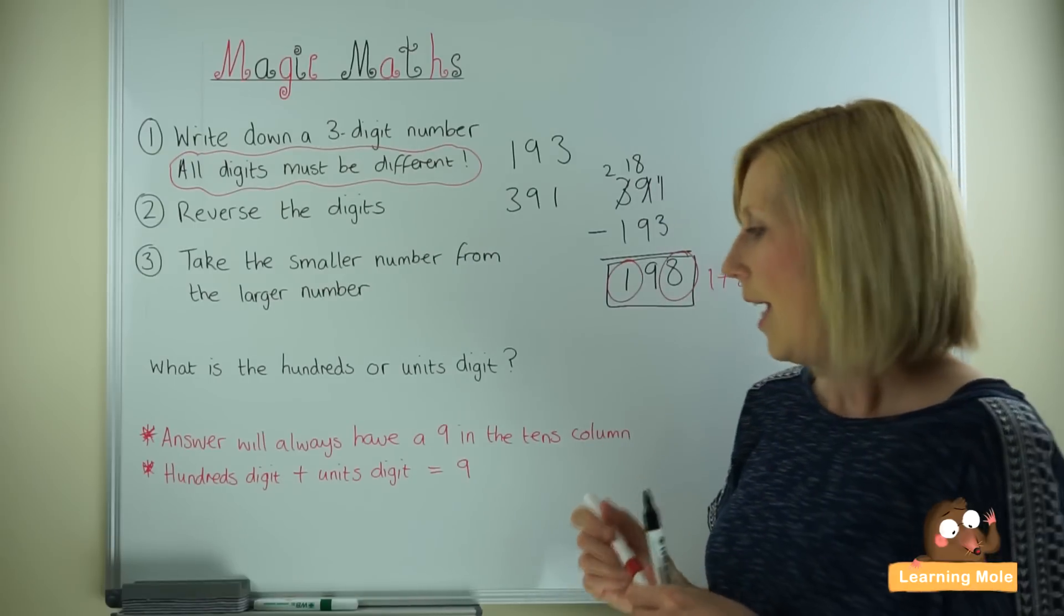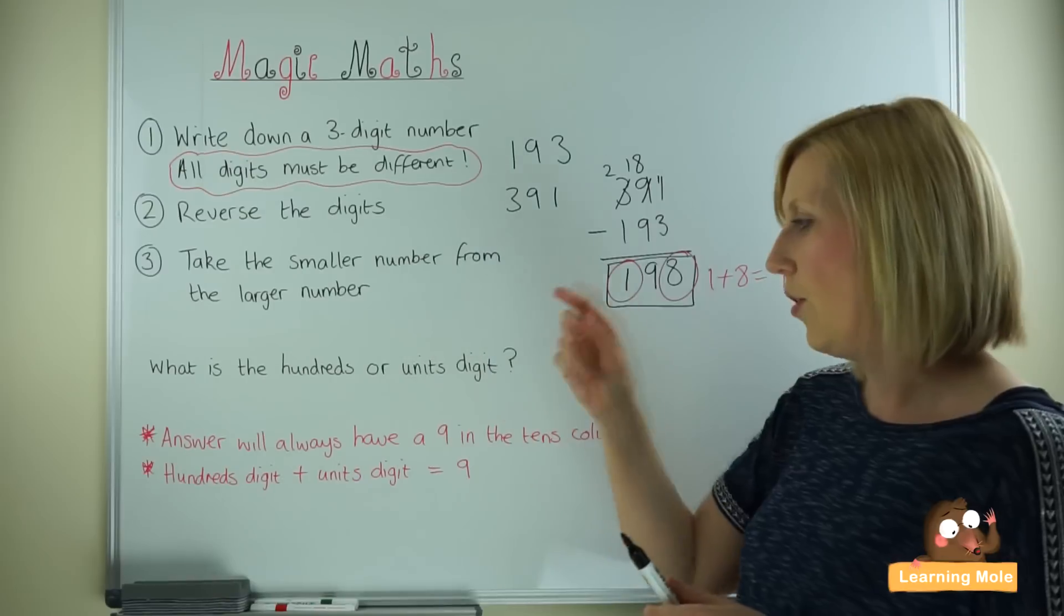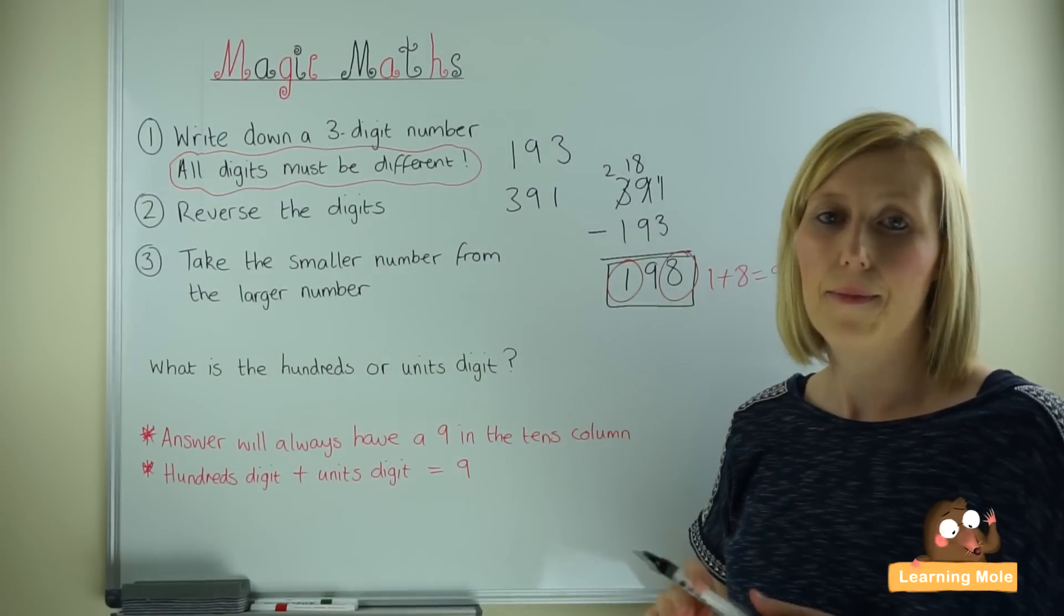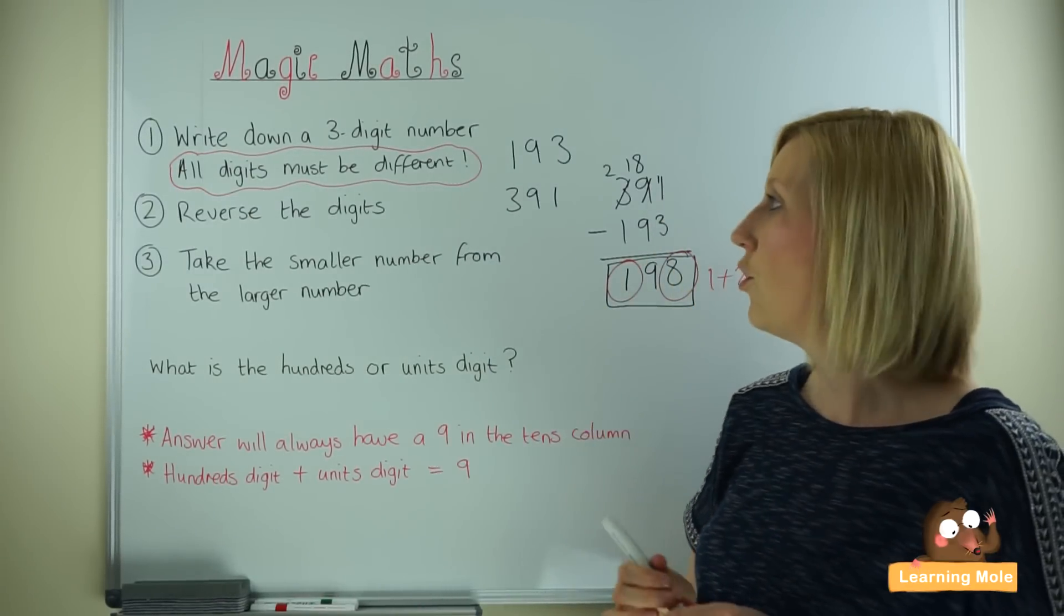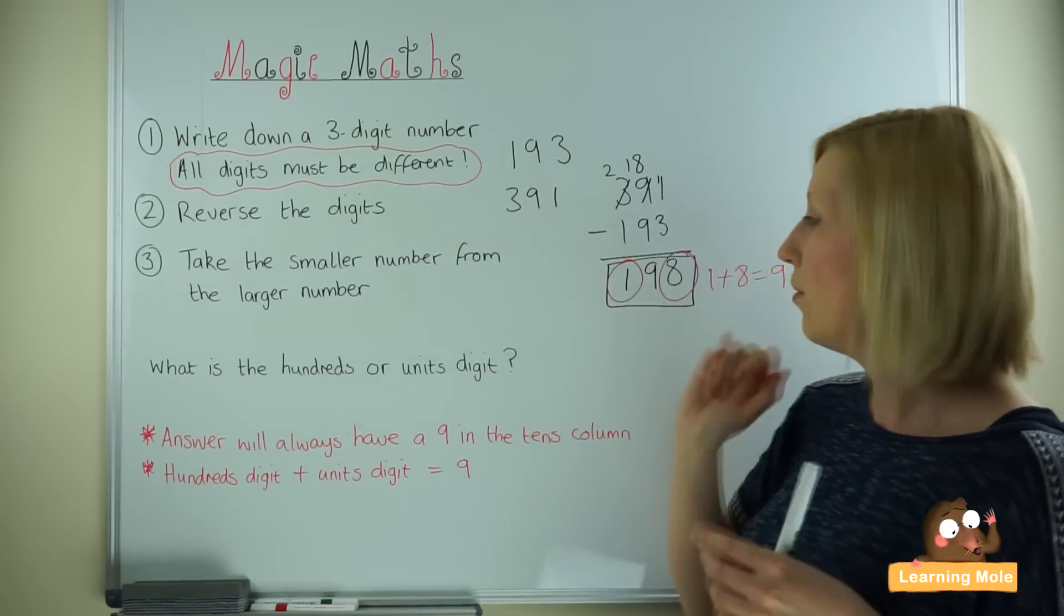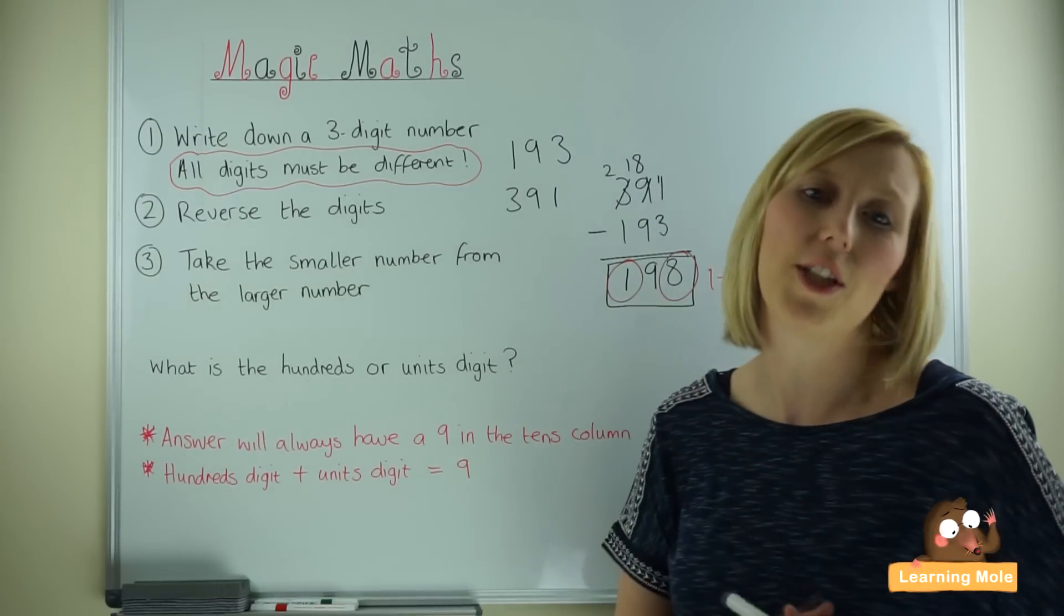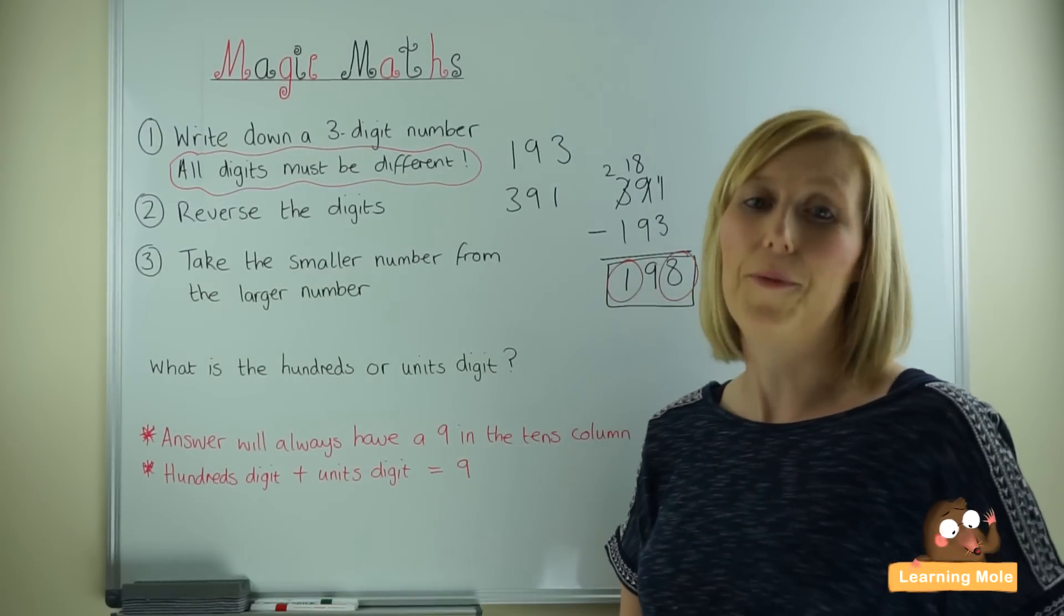So the child will decide which one to ask, hundreds or units. So if I am pretending that I am using this magic maths formula, I'm going to say to the person, I won't know that their number is 198, but I'm going to say, well, what was your hundreds number? They will tell me 1.